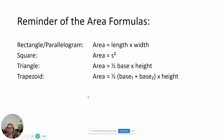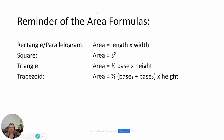Reminder of our area formulas: a rectangle or parallelogram is length times width, or base times height. A square is side squared. A triangle is one-half base times height, or base times height divided by two. A trapezoid is one-half of base one plus base two times the height.